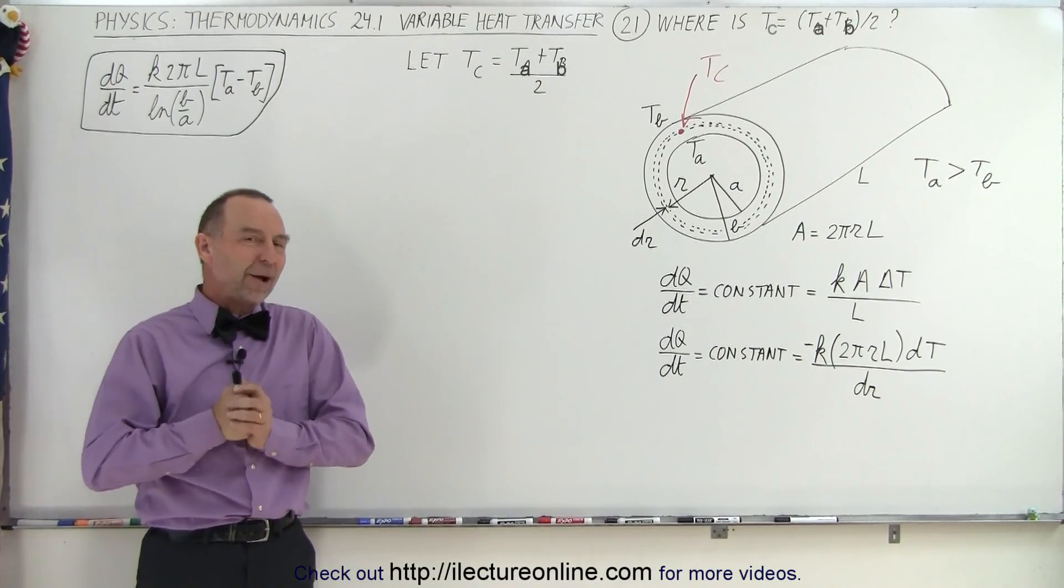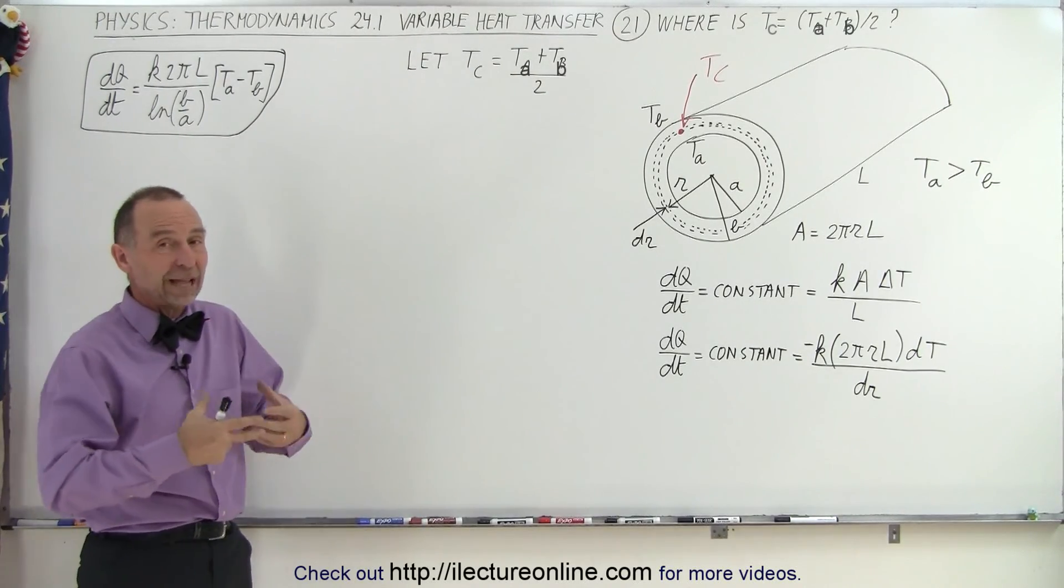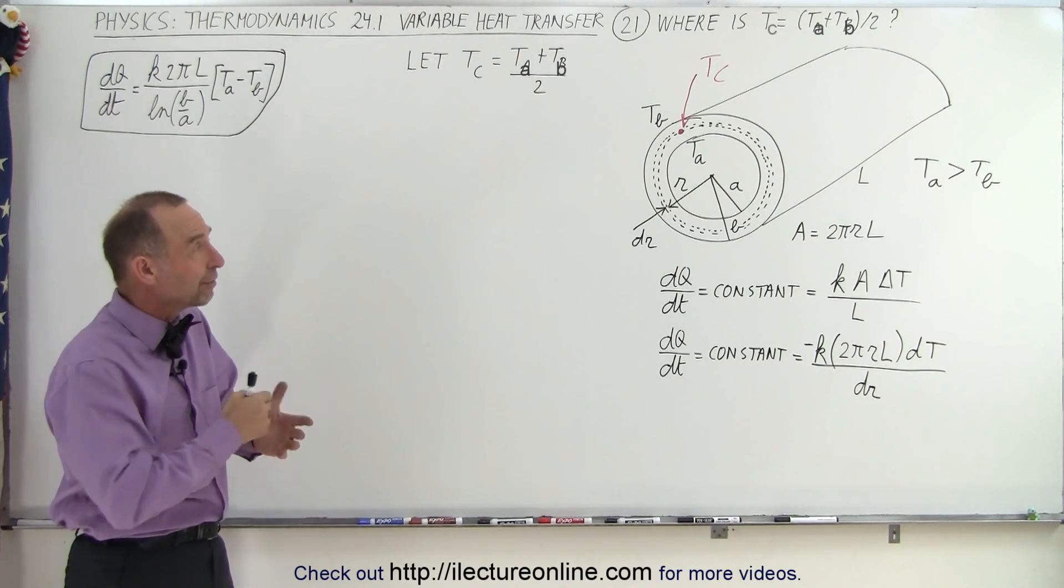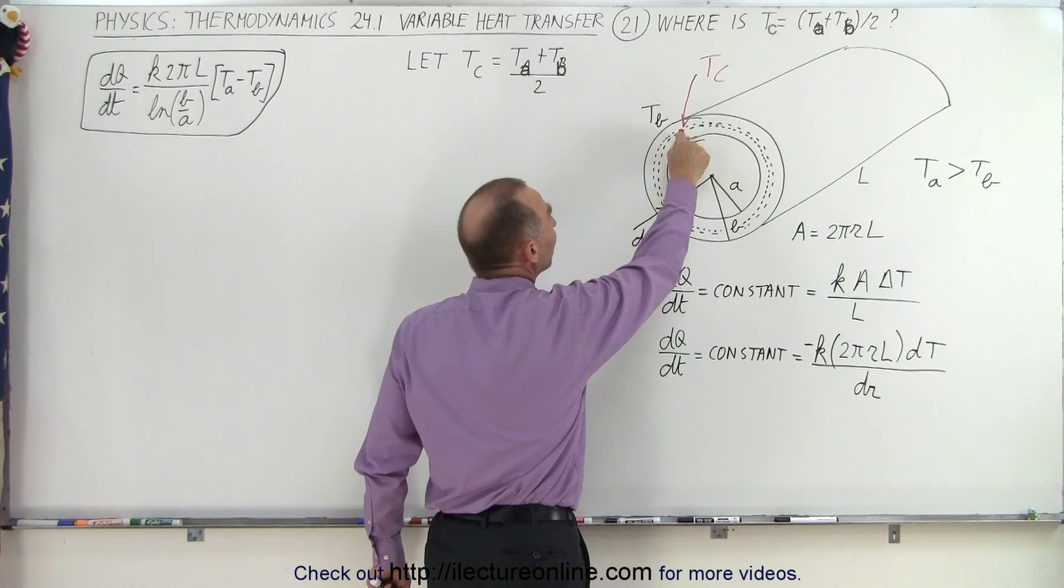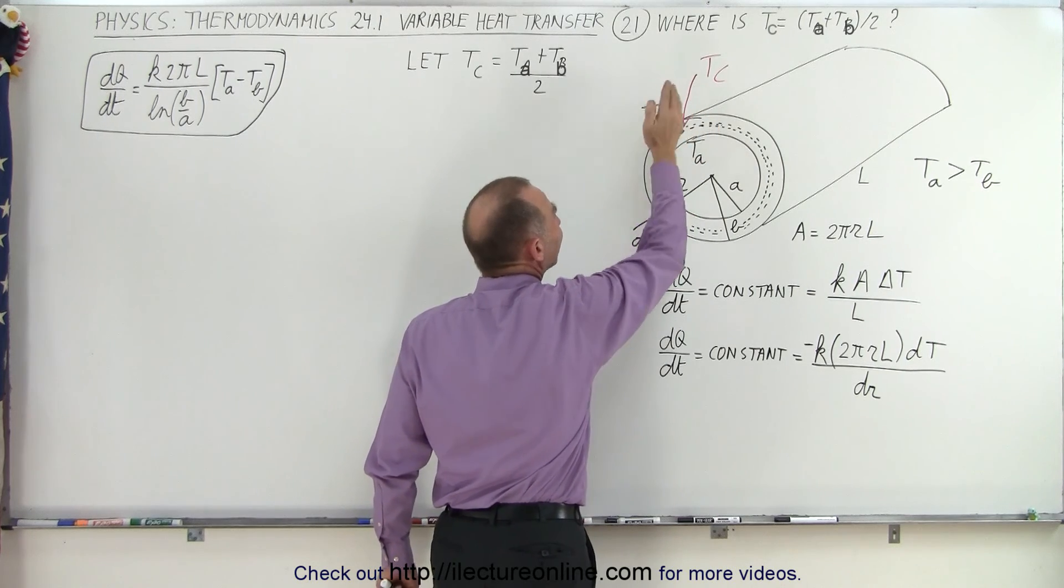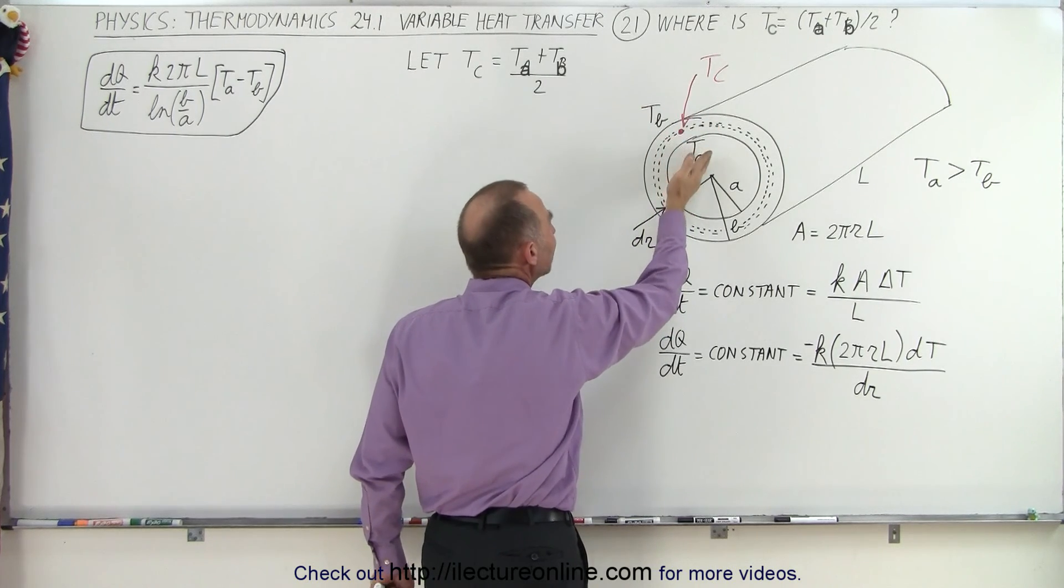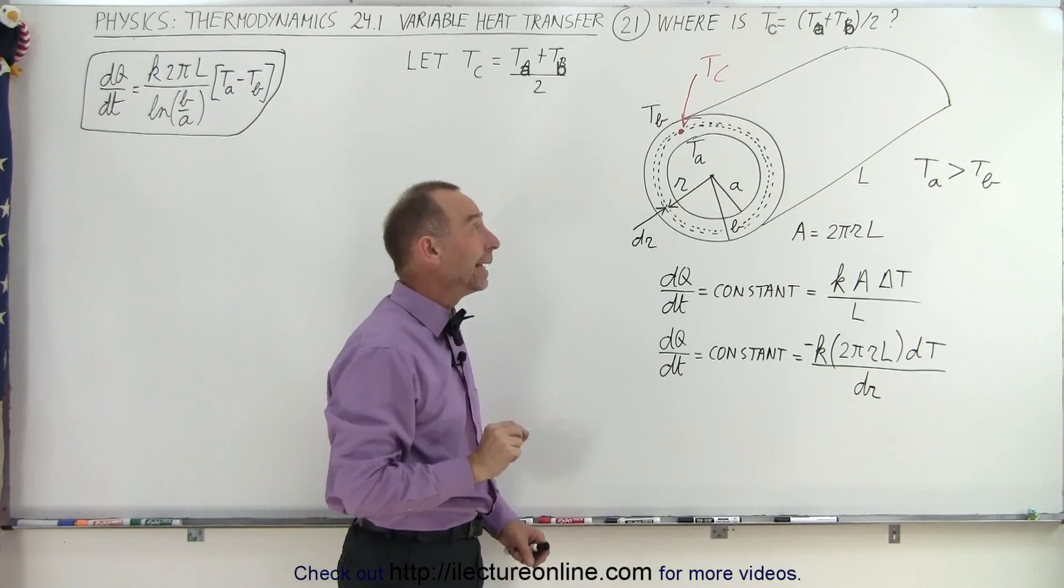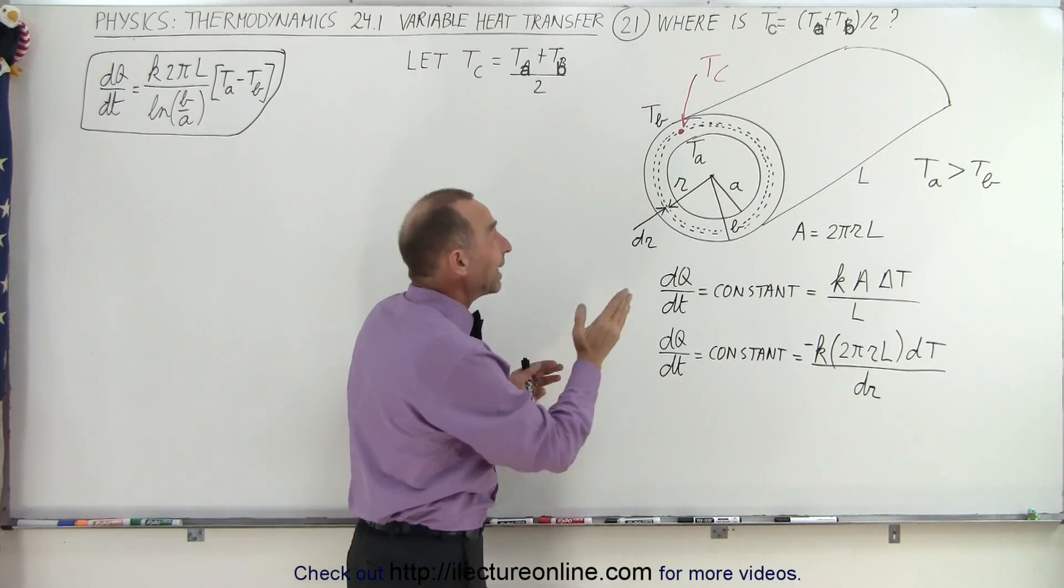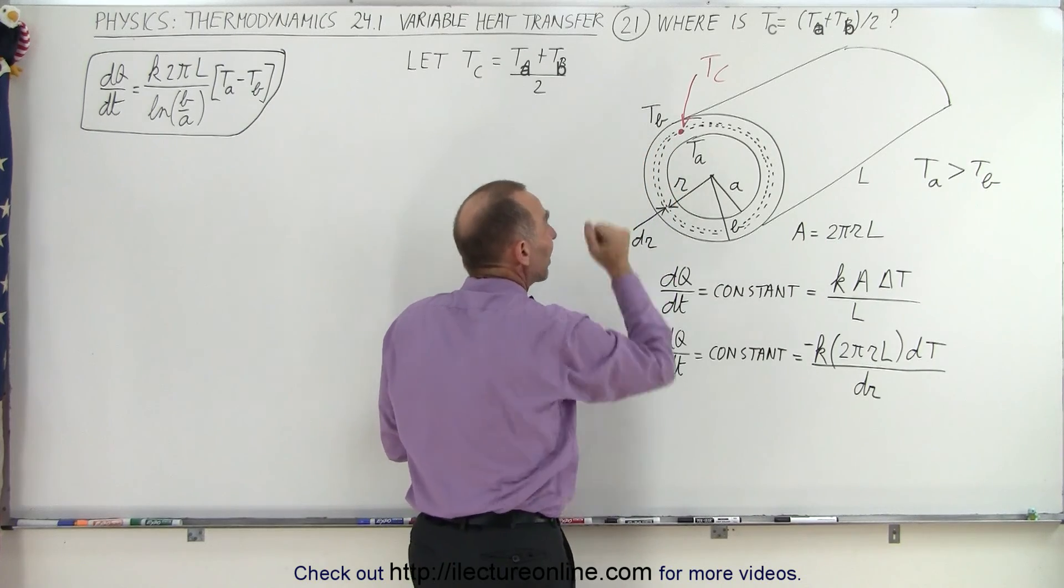Welcome to our lecture online. Now we're going to do something interesting. We have the same problem as we did on the previous video, but what we're trying to do now is find a point where the temperature, let's call it Tc, is exactly halfway between Ta and Tb, and we're trying to find where that point is located, and it's probably not going to be right in the middle between the inside and the outside radius.